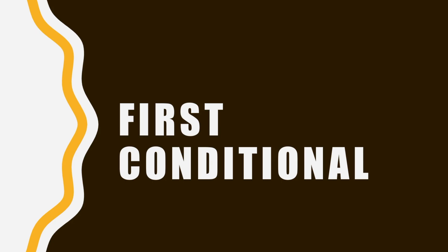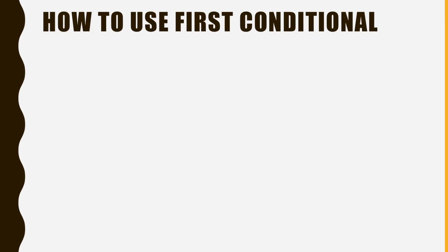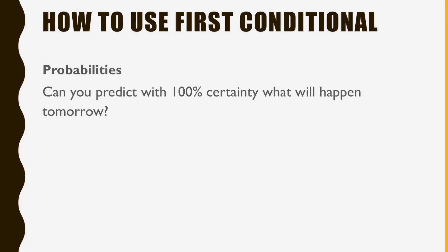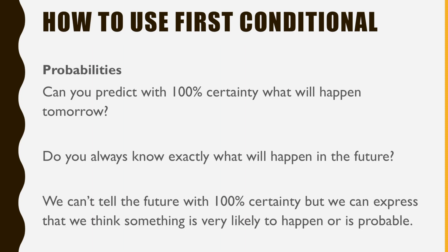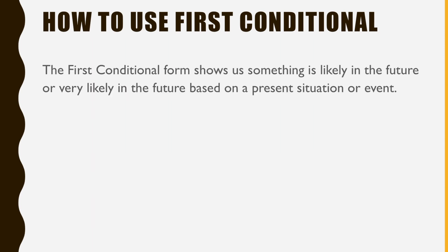Let's look at first conditional now. Probabilities. Can you predict with 100% certainty what will happen tomorrow? Do you always know exactly what will happen in the future? My guess is no. We can't tell the future with 100% certainty, but we can express that we think something is very likely to happen or is probable. The first conditional form shows us something is likely to happen in the future based on a present situation or event.